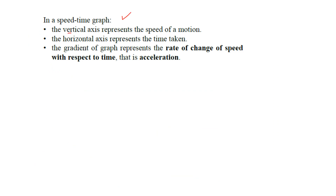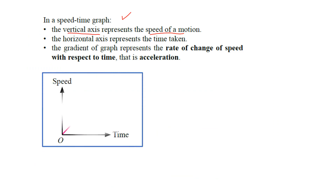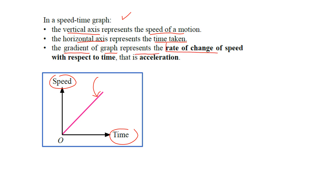In a speed-time graph, your vertical axis — your y-axis — represents the speed. And then your horizontal axis — your x-axis — represents time taken. The gradient of the graph represents the rate of change of speed with respect to time.